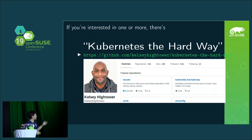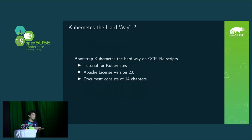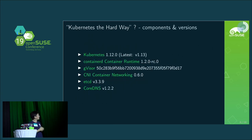I will talk about Kubernetes the hard way, generally. So what is Kubernetes the hard way? It's a bootstrap of Kubernetes the hard way on GCP cloud, but there is no script — no automatic commands. It's a tutorial for Kubernetes, Apache license version 2, and it's just documentation. The document consists of 14 chapters.